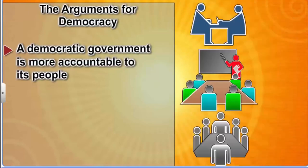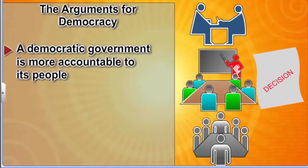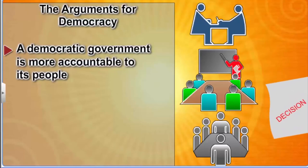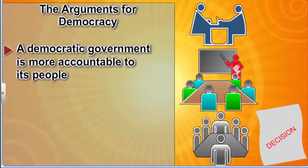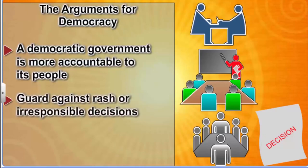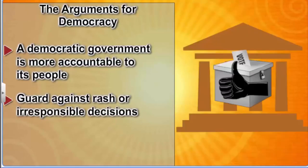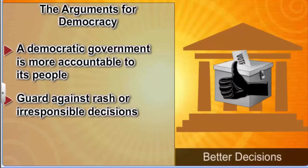As mentioned earlier, democratic decisions involve a series of consultations, meetings, and discussions among many persons. Granted, such a decision-making process is time-consuming. However, this helps a democracy guard against rash or irresponsible decisions. That's our second argument in favor of democracy: a democratic government can ensure better decisions.